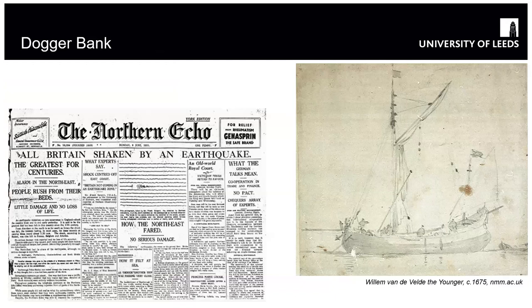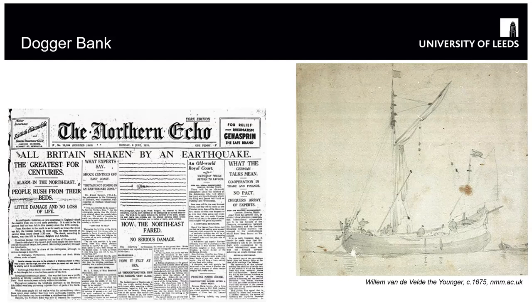Dogger Bank itself is quite famous — the name is synonymous with the Dogger Bank earthquake, a magnitude 6.1 earthquake in 1931. It's a bit of a misnomer because the epicentre was actually located under the Silver Pit, southwest of Dogger Bank. The name 'dogger' actually comes from the dogger, a type of fishing vessel used on Dogger Bank to trawl for fish at the bottom.